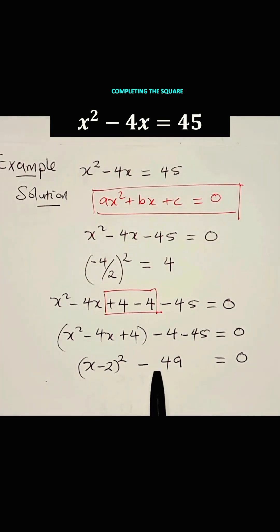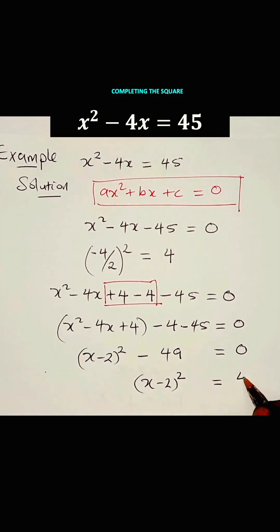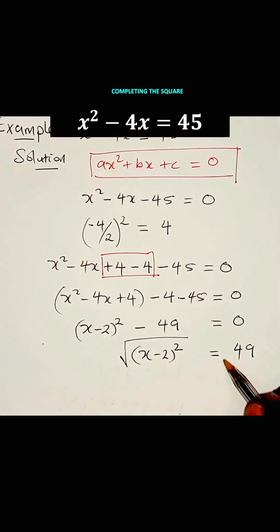Now, we take this minus 49 to the right-hand side of the equation. Then we say X minus 2 squared is equal to 49. Now, we take the root on both sides of that equation.